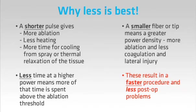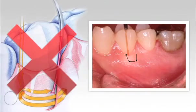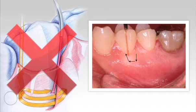So less post-op problems. When we come to using the diode laser in a periodontal pocket, a gentle stroking action is essential. Some articles in journals suggest putting the tip right down to the base of the pocket and sweeping it sideways many times before withdrawing it, as shown on the left diagram.